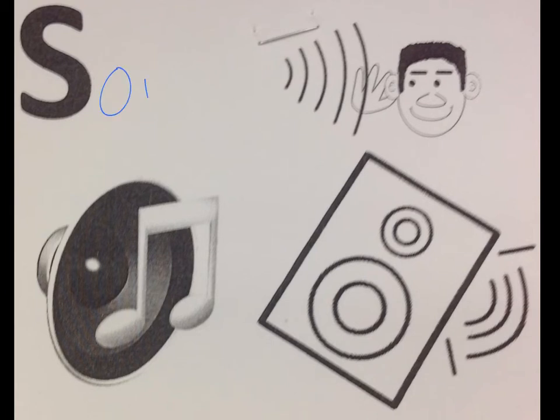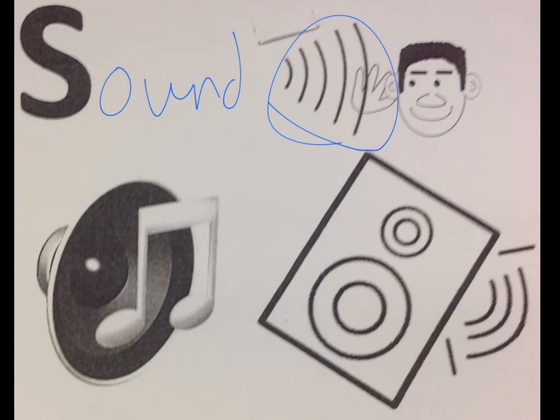The last one we have here is sound energy. Sound comes in the form of waves — we can't see it, but that is sound energy. I have some examples here: I have a speaker right here, and I have another speaker right here. So when I'm talking, you're able to hear me because these sound waves are traveling to you — that is sound energy.